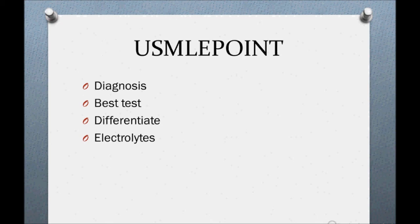Key USMLE points to remember: diagnosis is based on clinical history and signs and symptoms. The best diagnostic test is the ACTH stimulation test. Differentiate primary from secondary by ACTH level — high ACTH is primary, low ACTH is secondary. Due to aldosterone loss, expect hyponatremia, hyperkalemia, and mild acidosis. Thank you for watching.